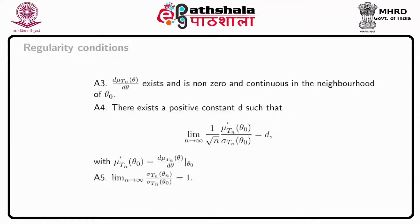Assumption A3: the derivative of mu(T_n, theta) with respect to theta exists and is non-zero and is continuous in the neighborhood of theta naught.